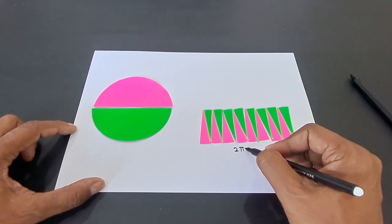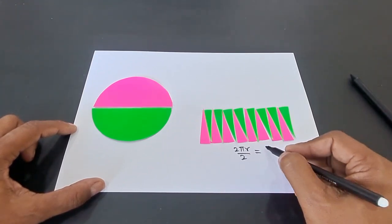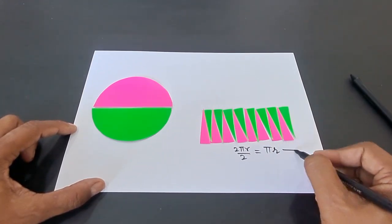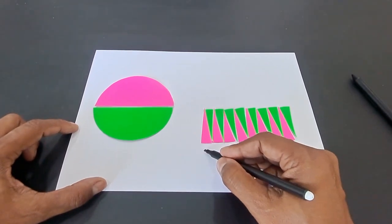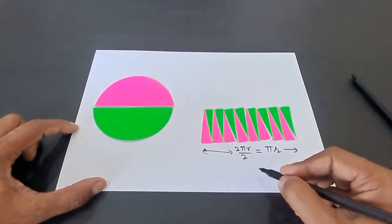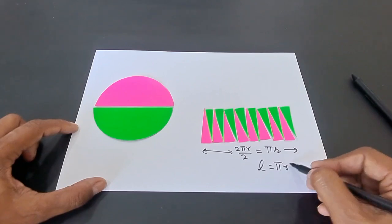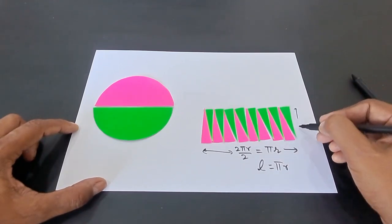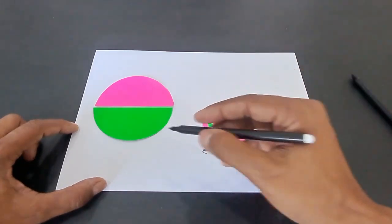So the length of this rectangle will be πr. What about the breadth? The breadth of the rectangle is just equal to the radius of the circle.